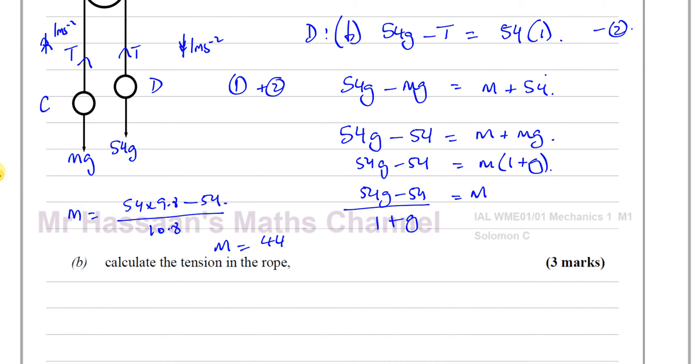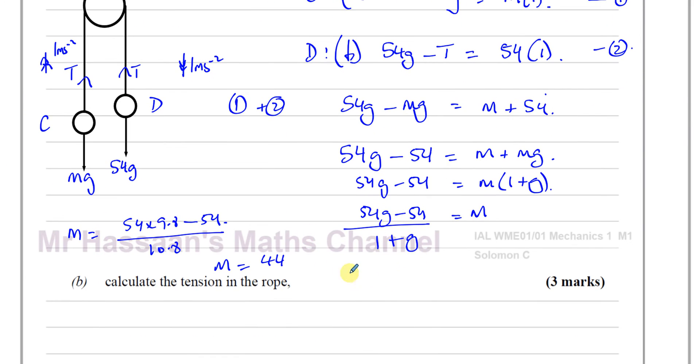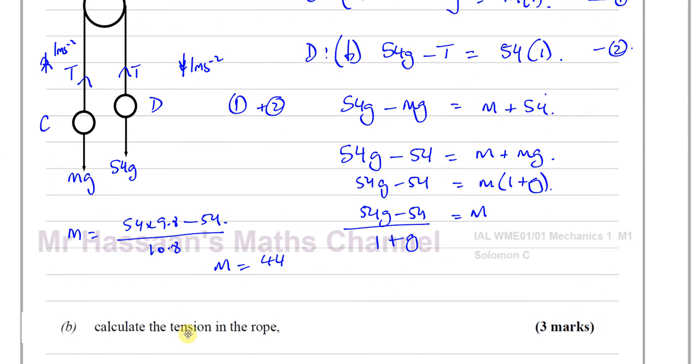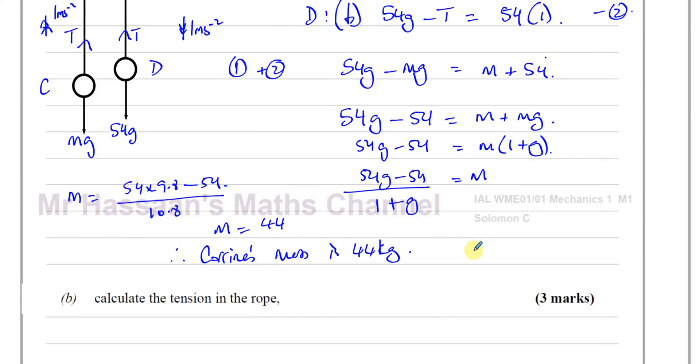So M is equal to 44. Therefore, Corinne's mass is 44 kilograms. And then we've got to find the tension in the rope.